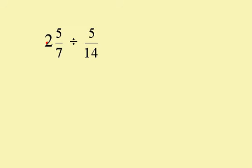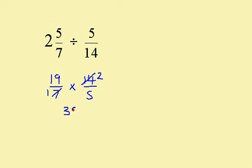Now we have a mixed number that we need to change to top-heavy. 2 times 7 is 14; add that to the top is 19. So I've got 19 over 7. Change this to a multiply and flip this one so it's 14 over 5. Now cancel any top number with any bottom number: 7 goes into 7 once, and 7 goes into 14 twice. Now I can multiply: 19 times 2 is 38, and 1 times 5 is 5. This is top-heavy. 5 goes into 38 seven times with a remainder of 3, so it's 7 and 3 fifths.